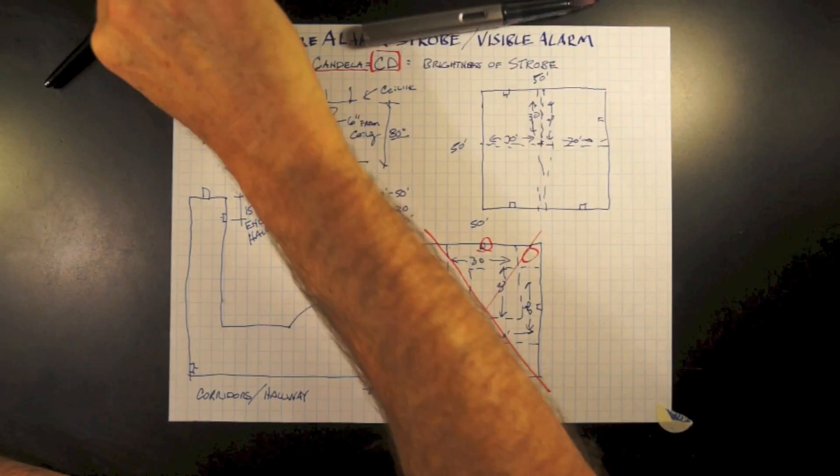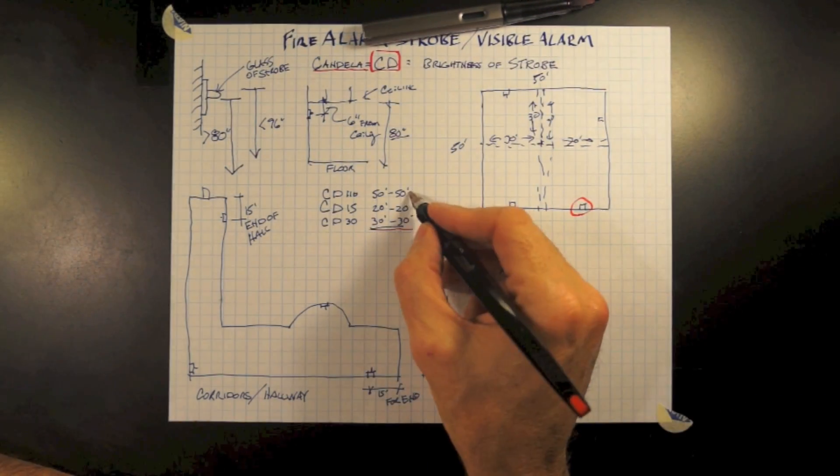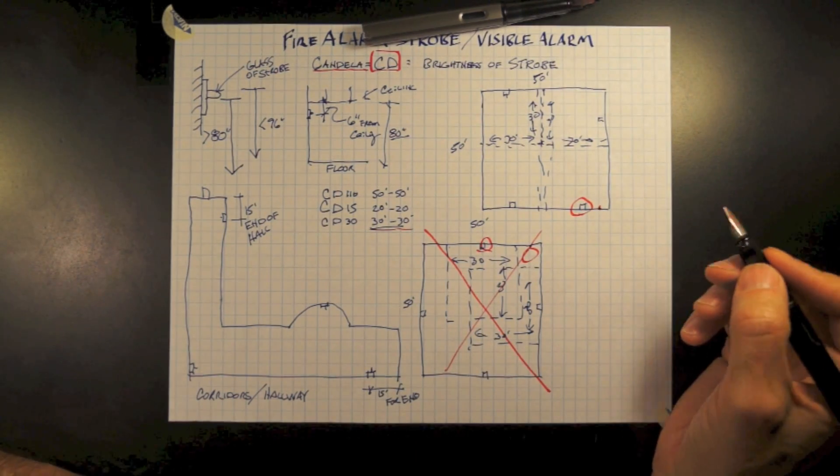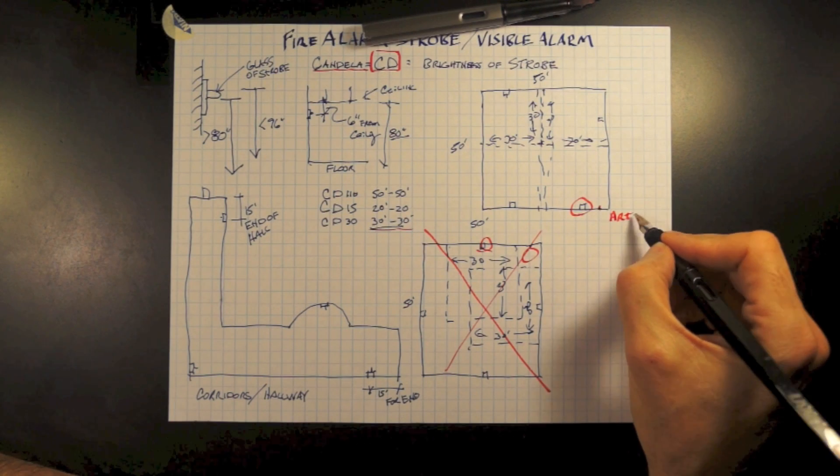This layout actually covers the entire room with still only four strobes. Now my issue as an architect is the strobe being in the middle of the wall. That's exactly where I want artwork, or the owner wants artwork.